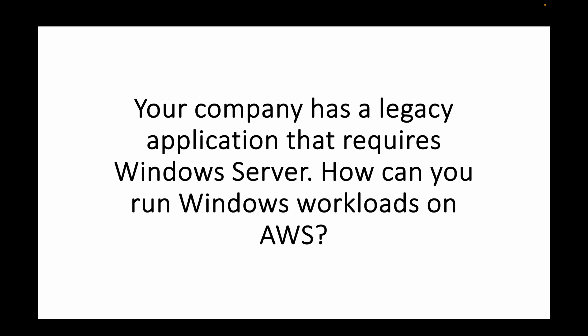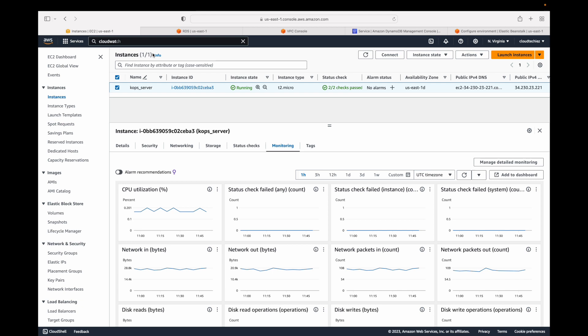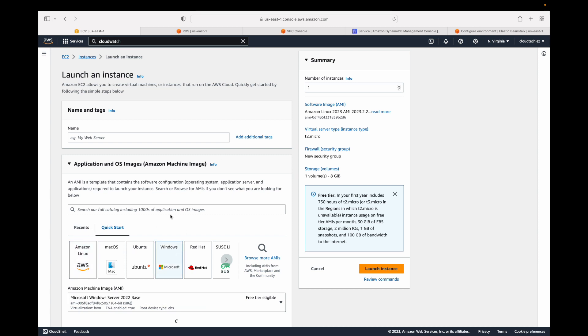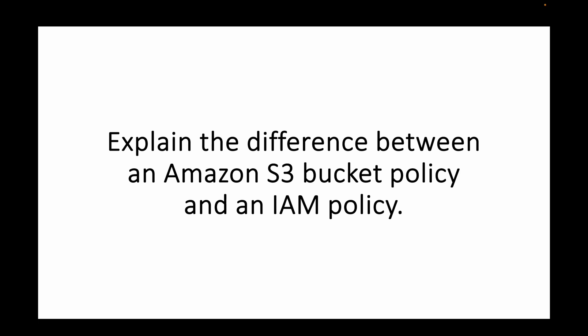The next question: your company has a legacy application that requires Windows Server — how can you run Windows workloads on AWS? We can launch an EC2 instance but choose the Windows AMI when launching. That gives us a Windows EC2 instance. We can log into this Windows instance and deploy our Windows application. You use Amazon EC2 instances with Windows Server as the operating system, enabling you to run Windows workloads on AWS.